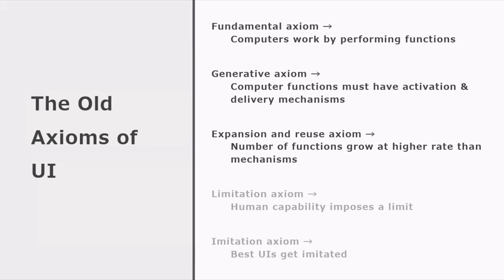The third axiom is the expansion and reuse axiom. The number of functions grows at higher rate than mechanisms of activation and delivery. What this means is that computers constantly increment the number of functions available. This implies that we need to expand the user interface and maybe reuse elements of the user interface.